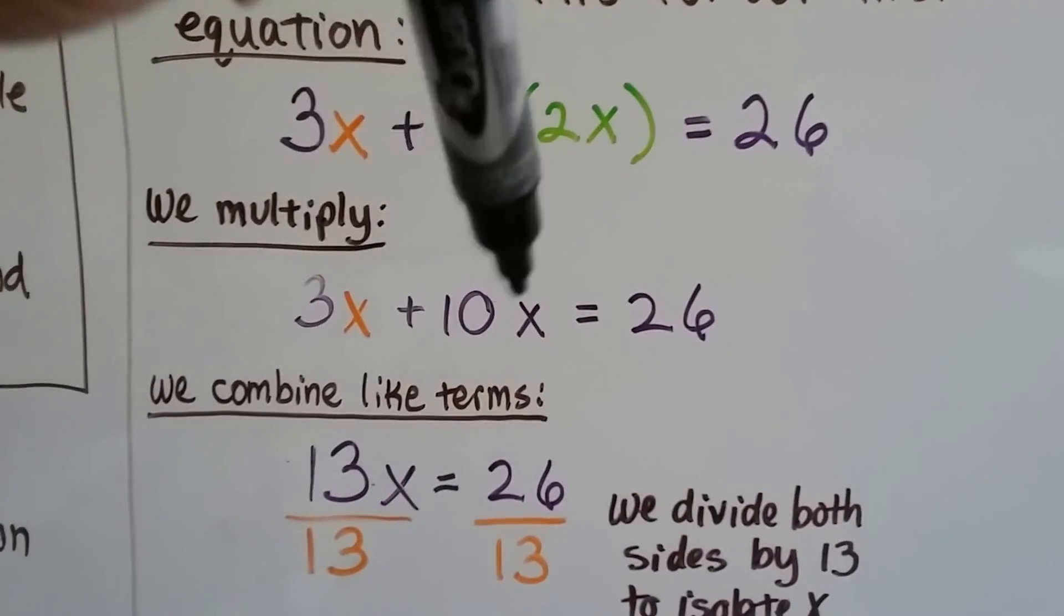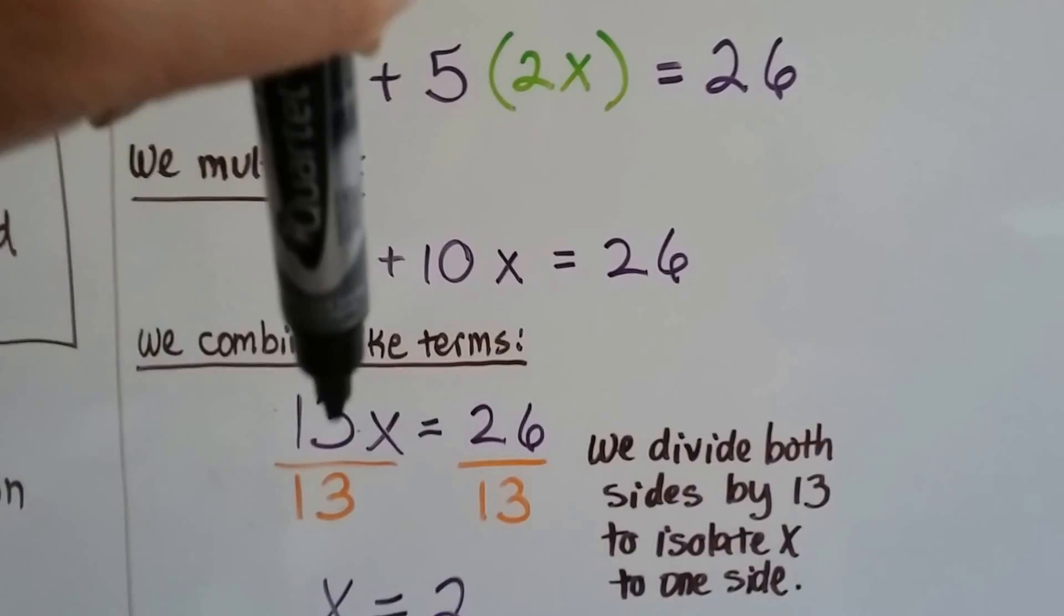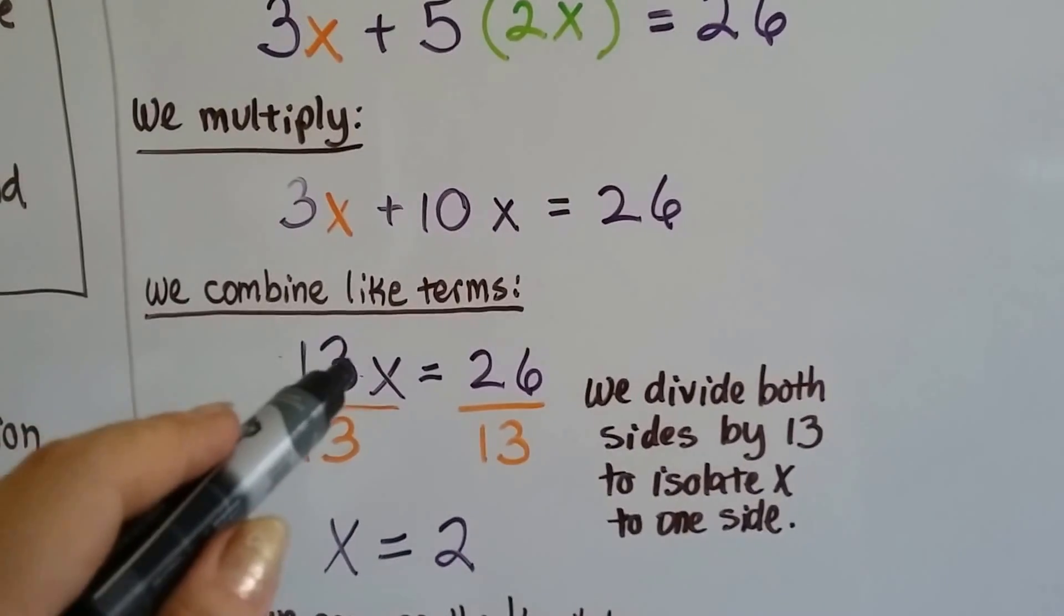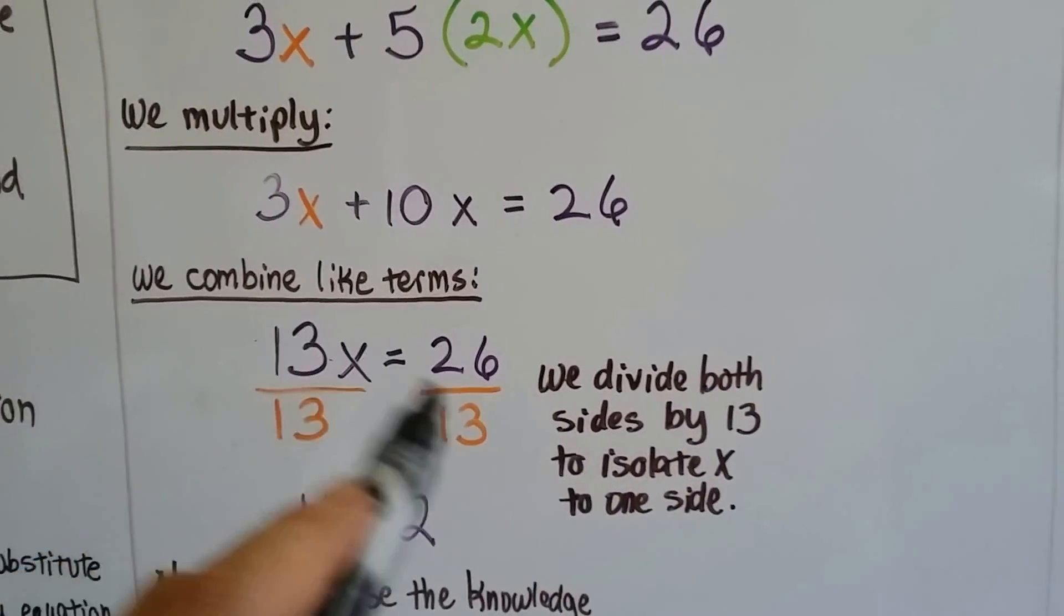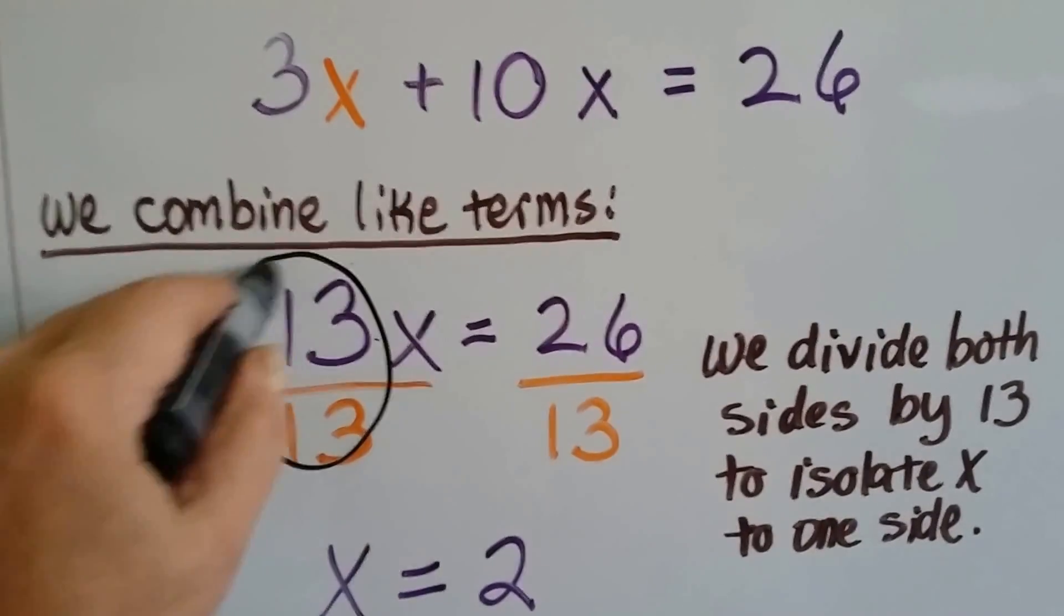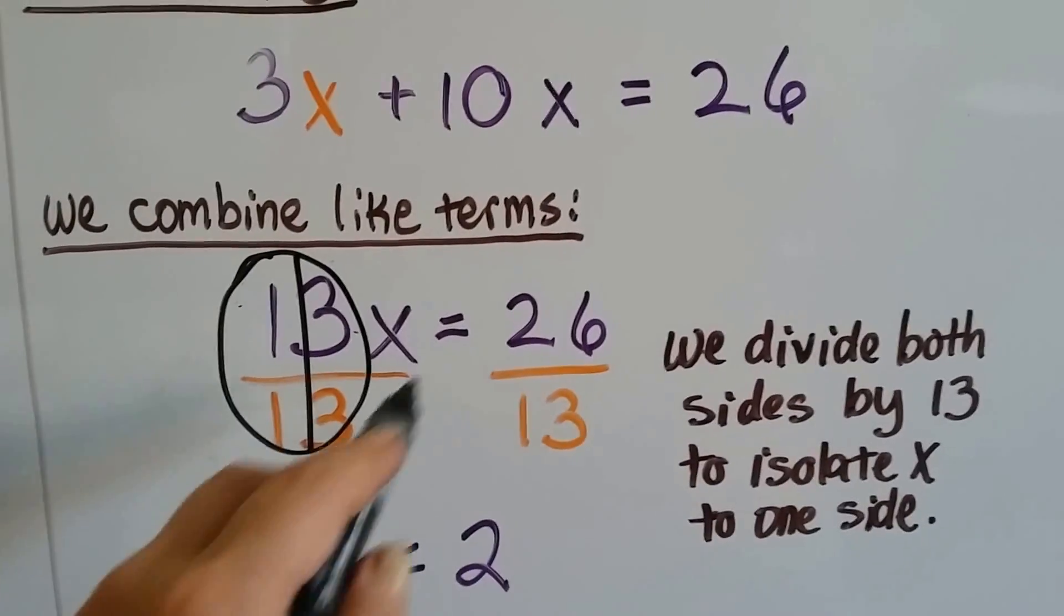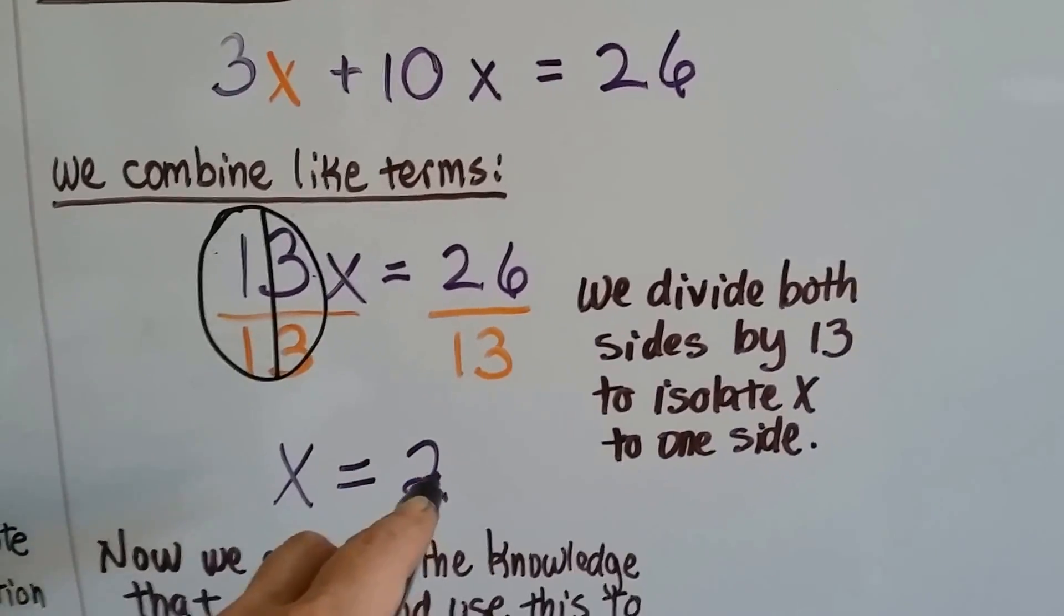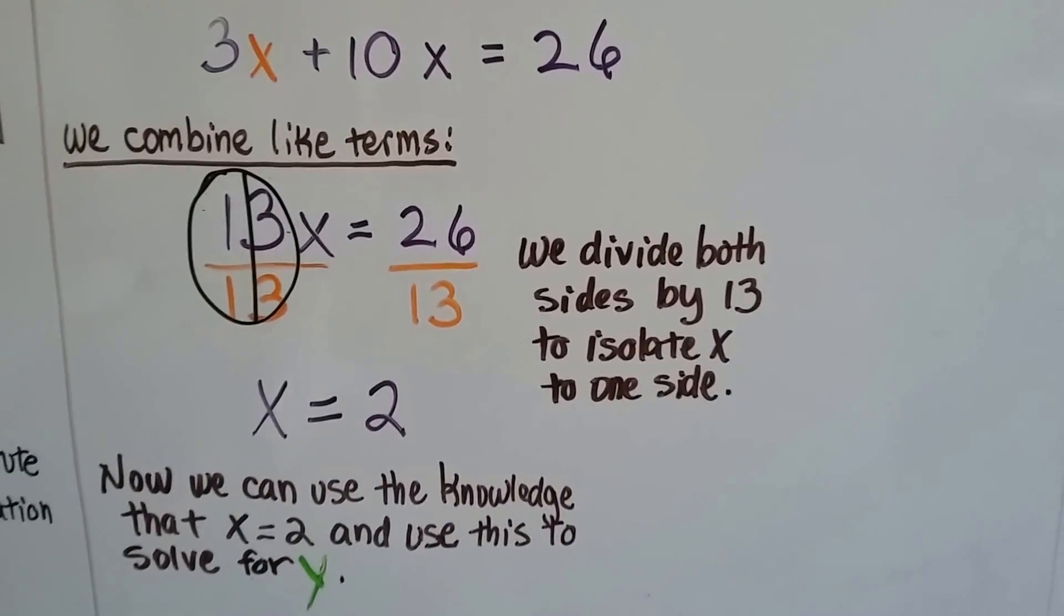Now we've got a 3x and a 10x. We can combine these like terms and get 13x. We divide both sides by 13 to isolate that x. That gives us our friend the invisible one. 26 divided by 13 is 2. So x is equal to 2.